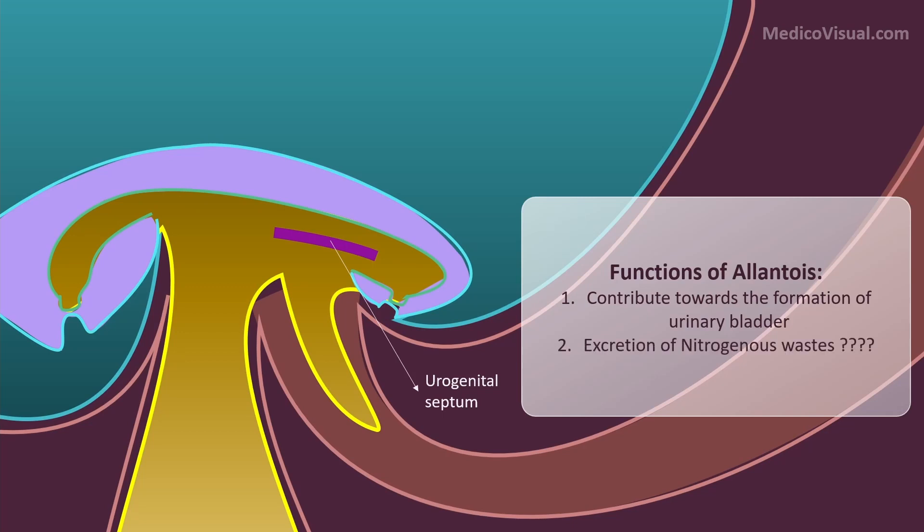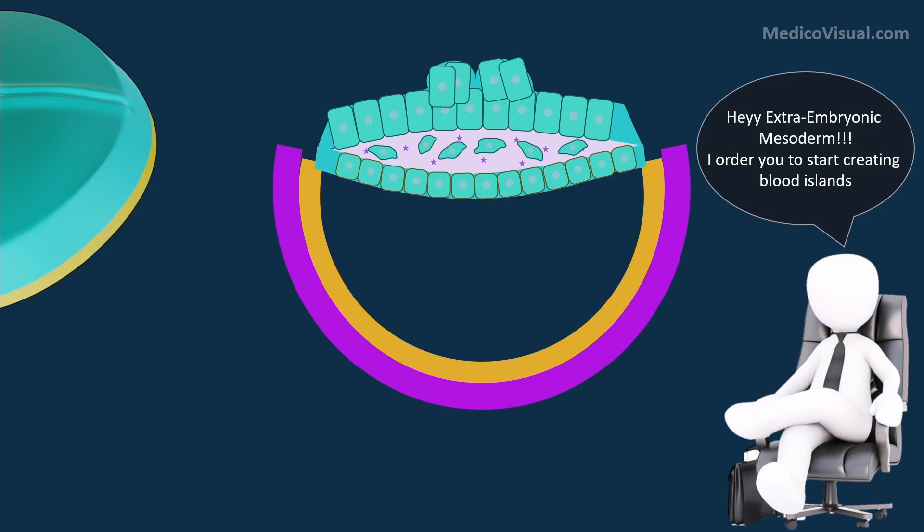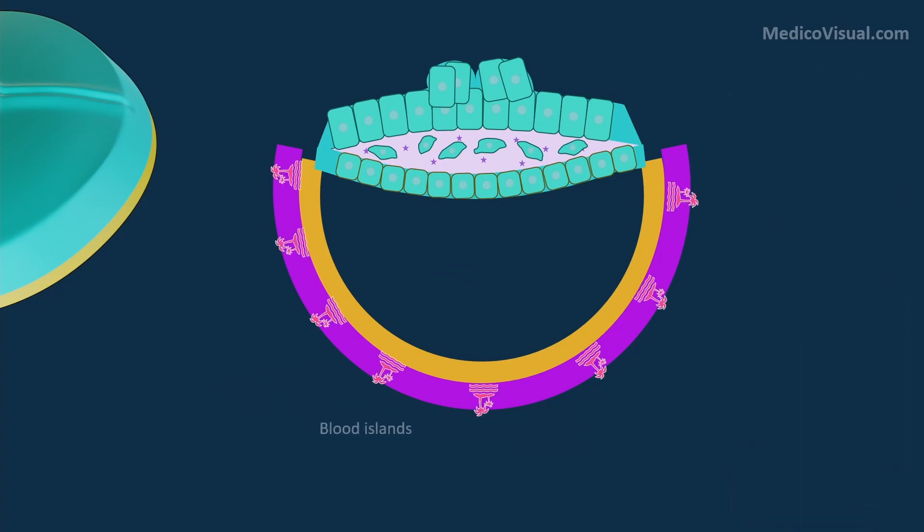In this week blood vessels are also formed. For this purpose, cells of the yolk sac wall induce the overlying extraembryonic mesoderm to form the blood islands that are aggregates of hemangioblasts.